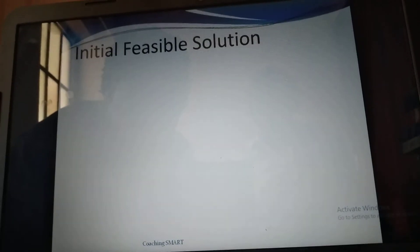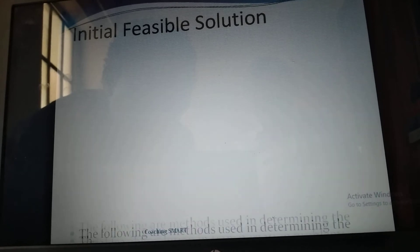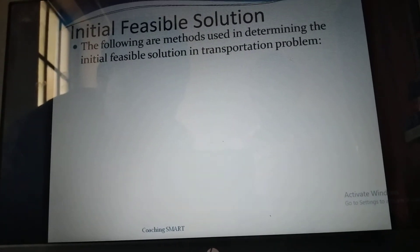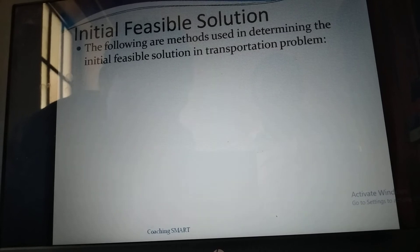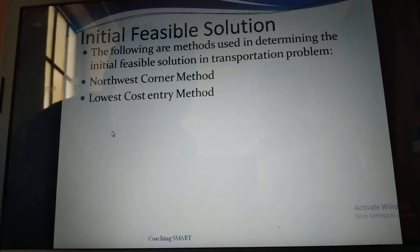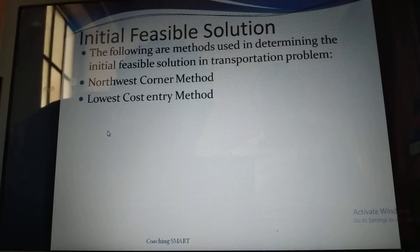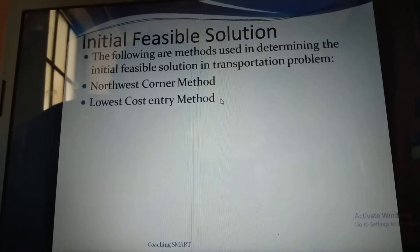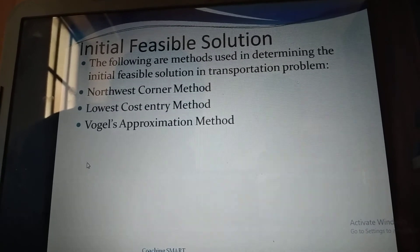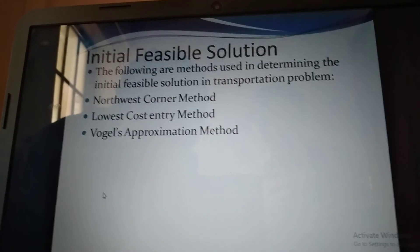The following are the methods used in determining the initial feasible solution in transportation problems: number one, the Northwest Corner Method; number two, the Lowest Cost Entry Method, also called the Matrix Minimum Method; number three, Vogel's Approximation Method, also called the Penalty Method.